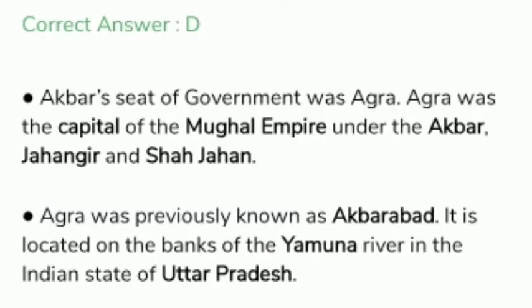Akbar's seat of government was Agra. Agra was the capital of the Mughal Empire under Akbar, Jahangir, and Shah Jahan. Agra was previously known as Akbarabad. It is located on the banks of the Yamuna river in the Indian state of Uttar Pradesh.